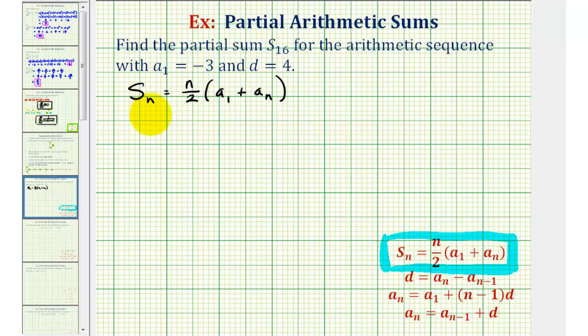Since we're looking for the partial sum of the first 16 terms, or S sub 16, we know N is equal to 16, so we have 16 divided by two times the quantity A sub one is the first term.